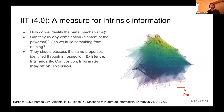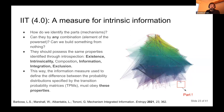If a part has parts, then all three are parts of the experience — but each one individually cannot have further parts. All the rest — the units must obey intrinsicality, information, integration, and exclusion. This way, the information measure we use to define the difference between the probability distributions measured by perturbing the system, and the probability after partitioning, must obey these properties.